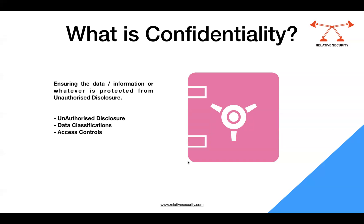Confidentiality means any information that belongs to your organization or any entity you're trying to protect should be only available to authorized personnel or authorized systems. The authorized persons are defined by your organization or the data owners — they define which data should be available to which person and who can access it and how much they can access.